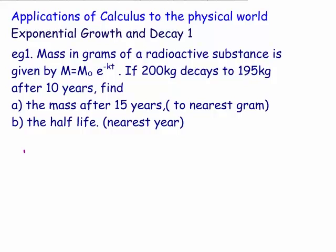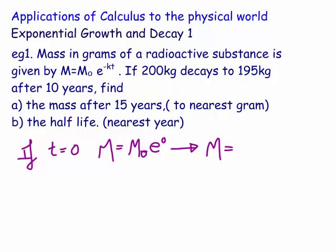The first thing is, what is M0? Well, I always think M0 is the initial mass. So if we substitute in t equals 0, at t equals 0, we have that M is equal to M0 e to the minus kt. If t is 0, we get times e to the power 0, which we all should know is 1. So really, this means that the mass initially is in fact equal to M0. So what is M0? Well, if 200 kilograms decays to 195, we can see that M0 is 200 kilograms.